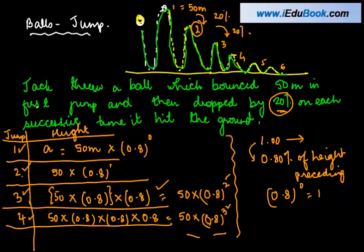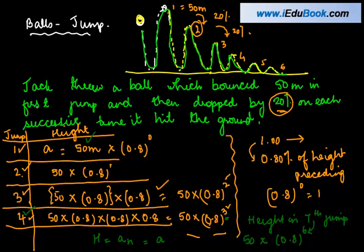Now this gives us a very interesting conclusion. If you have to find out what is the height in seventh jump, how can you find it out? We can simply find it out by multiplying 50 into 0.8 to the power 6. Why did I take 6 here? Because it is the seventh jump. Whatever is the number of jump, the power of 0.8 is 1 minus that.